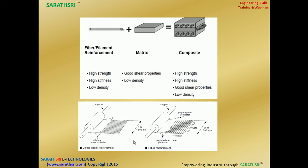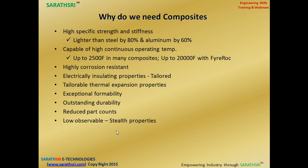A single ply is put together like a fabric or as a unidirectional arrangement. Why do we need composites? Because of high specific strength to stiffness, ability to withstand high temperatures, high corrosion resistance, outstanding durability, and because of composites we can reduce part count, making assembly easier and faster. Composites are also electrically insulating — unlike metallic materials where galvanic corrosion can occur — and can be tailor-made.